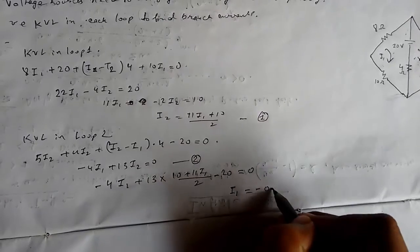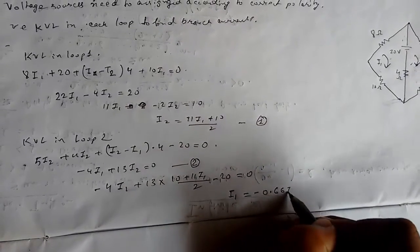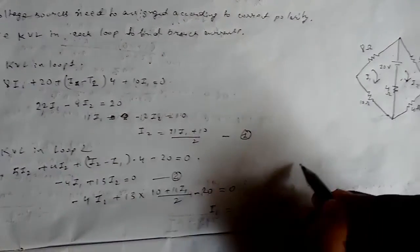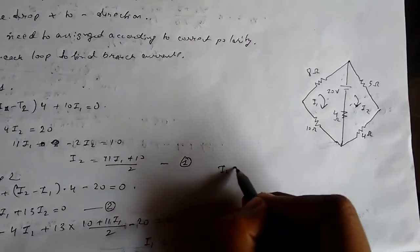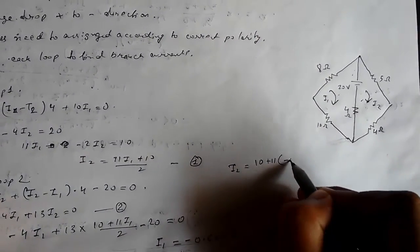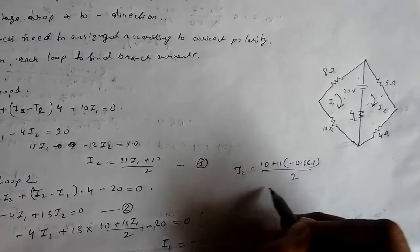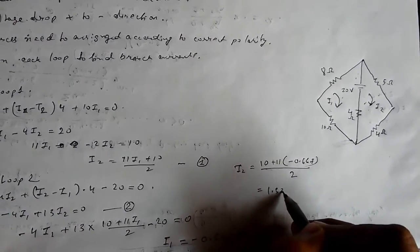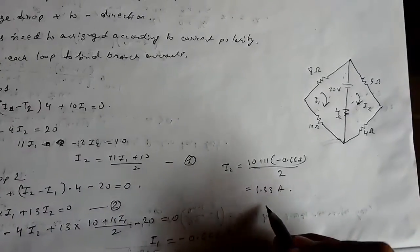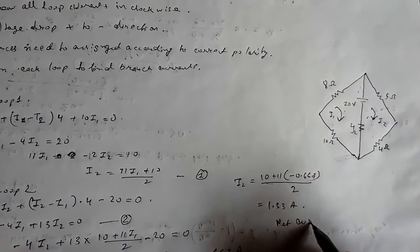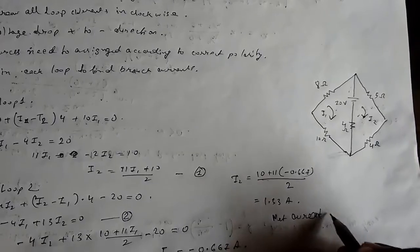Solving this we get I1 as -0.6667 amperes. And substituting the values, we get I2 equals (10 + 11(-0.667))/2, which gives us 1.33 amperes.